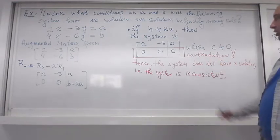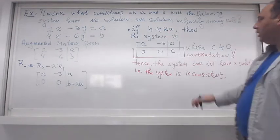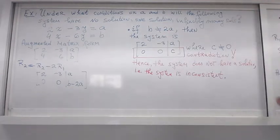If that happens, so this system will not have any solutions. So this is the case of no solution because the system is inconsistent. So when b is different from 2a, the system has no solution at all.